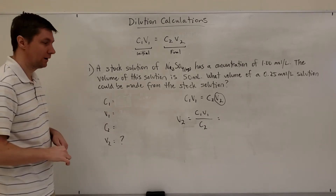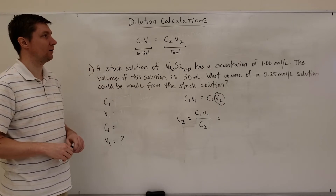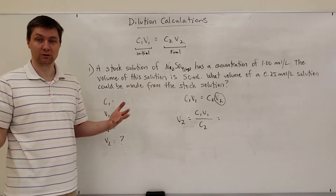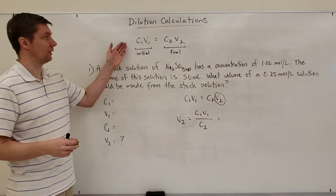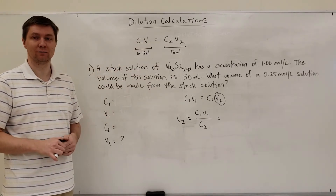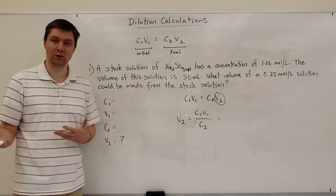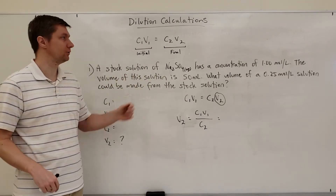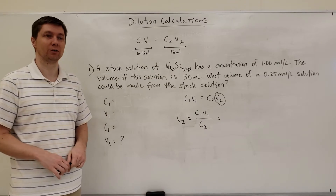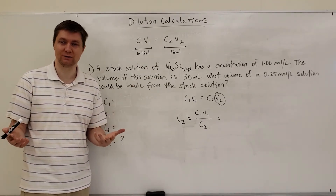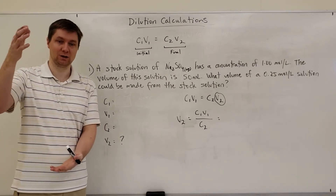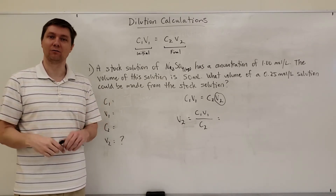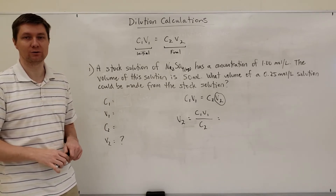The first thing I want to point out is the formula up here at the top. The formula looks actually really similar to Boyle's law, in that we've got an initial and a final side to the equation. But instead of pressure and volumes, here we're dealing with concentration and volumes. The ones are the initial concentration and volume, and the twos are the final concentration and volume. If the volume of the solution increases, the concentration decreases — those two are inversely proportional to each other, which is why the formula looks very similar to Boyle's law.